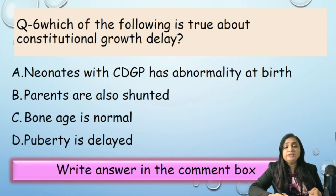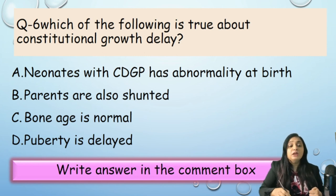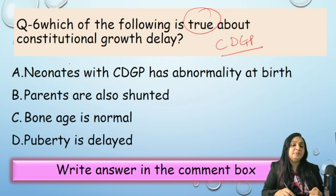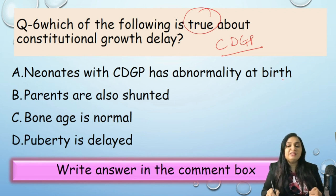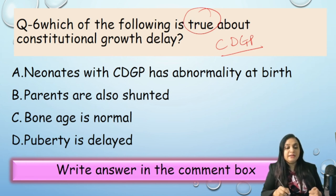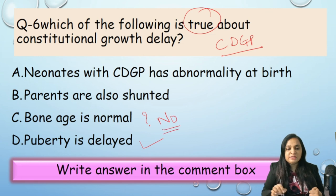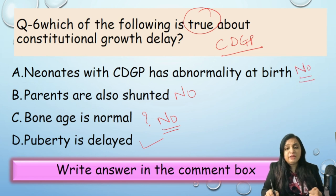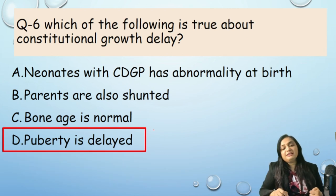Question 6: Which of the following is true about constitutional growth delay? Options: A) Neonates with CDGP have abnormality at birth; B) Parents are also stunted; C) Bone age is normal; D) Puberty is delayed. Analysis: Neonates with CDGP do not have abnormality at birth — incorrect. Parents are not stunted — incorrect. Bone age is not normal; it is delayed — incorrect. Puberty is delayed — correct. Correct answer: D, puberty is delayed.